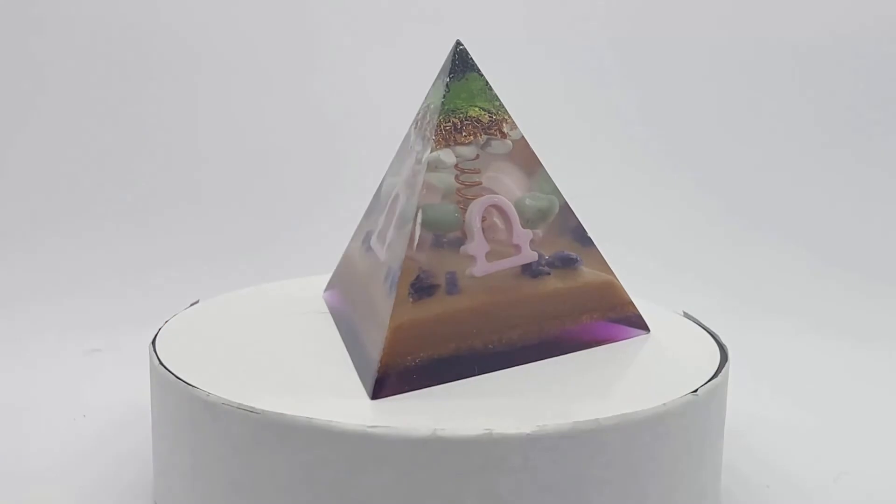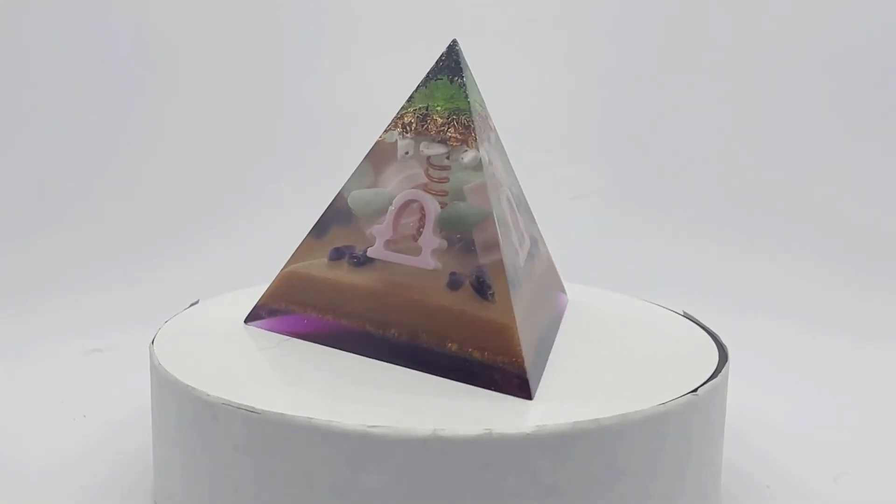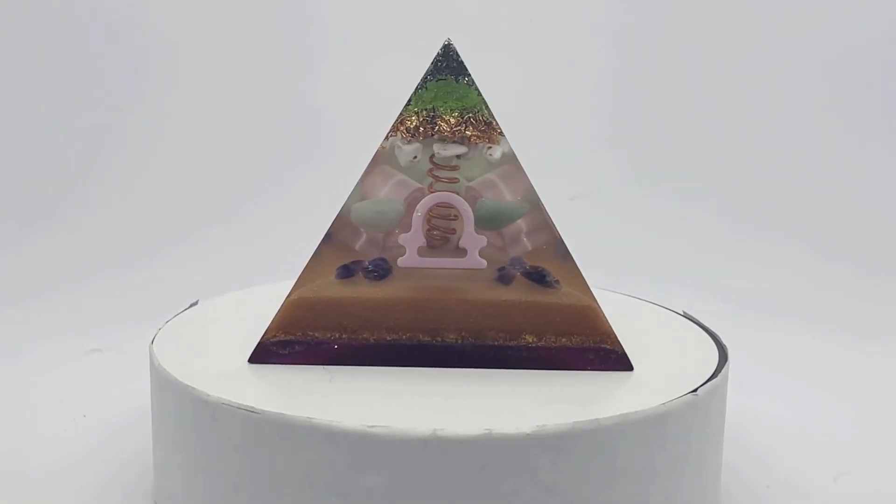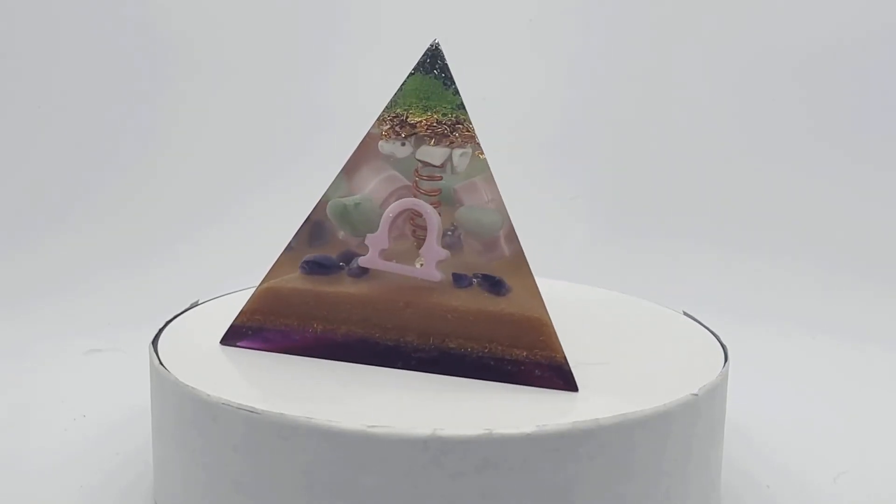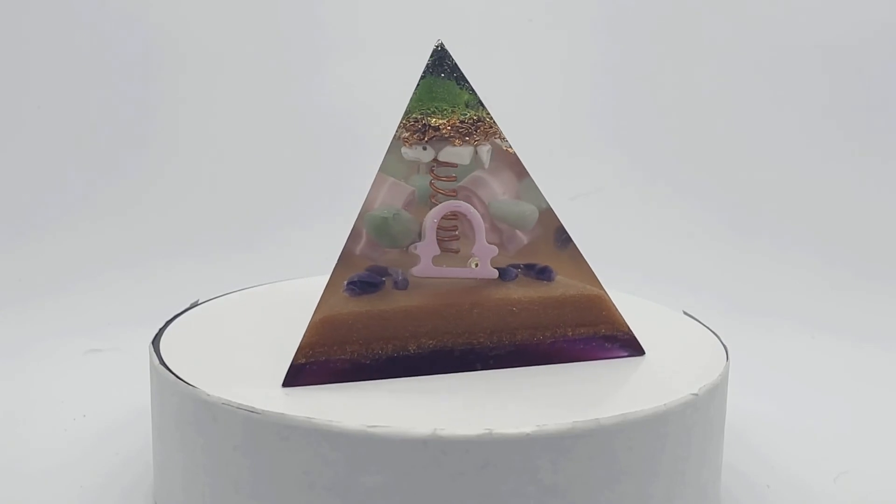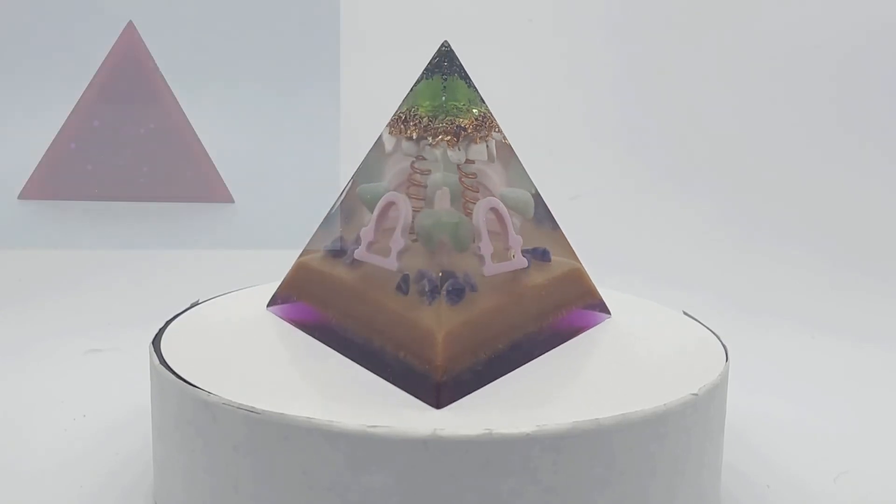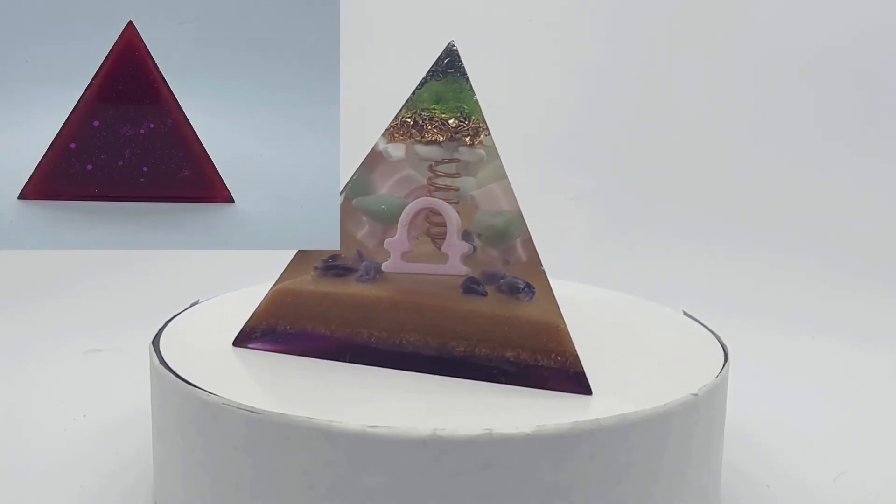The tetrahedron is an incredibly powerful and fundamental shape. This balancing combination of white howlite, green aventurine, and amethyst is an excellent recipe for Libra or anyone ready to take the next step on their spiritual quest.